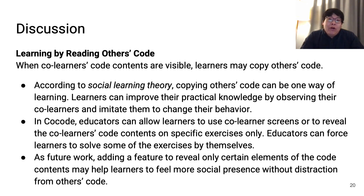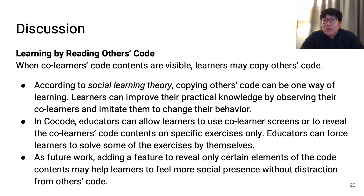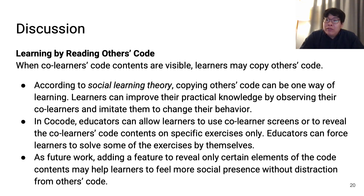In the paper, we also discussed several topics about CoreCode. First, there is an issue that learners may copy others' code when co-learners' code contents are visible. However, according to social learning theory, copying others' code can be one way of learning — learners can improve practical knowledge by observing co-learners and imitating them. Also, if educators are concerned, they can allow co-learner screens or reveal code contents on specific exercises only.